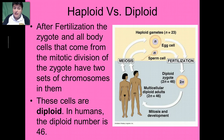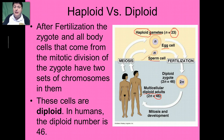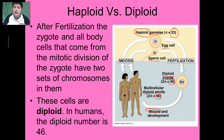After fertilization, the zygote and all the body cells that come from the mitotic division of the zygote have two sets of chromosomes. These cells are now referred to as diploid. In humans, that diploid number is 46. So here we've got two adults starting off as a diploid set with 46 chromosomes. They produce their gametes — sperm and egg — which are haploid at 23 chromosomes. After fertilization, the sperm and egg produce a zygote with 46 chromosomes, back to diploid. That zygote divides by mitosis, and we grow and develop back to an adult state, which is still diploid.